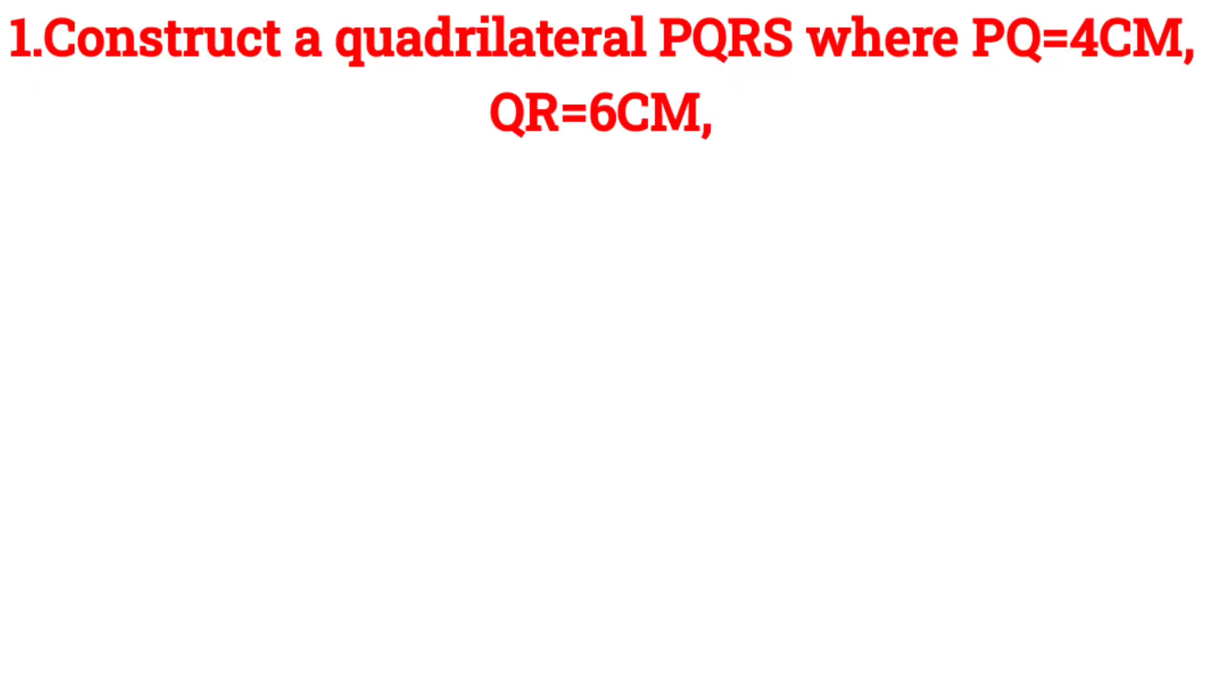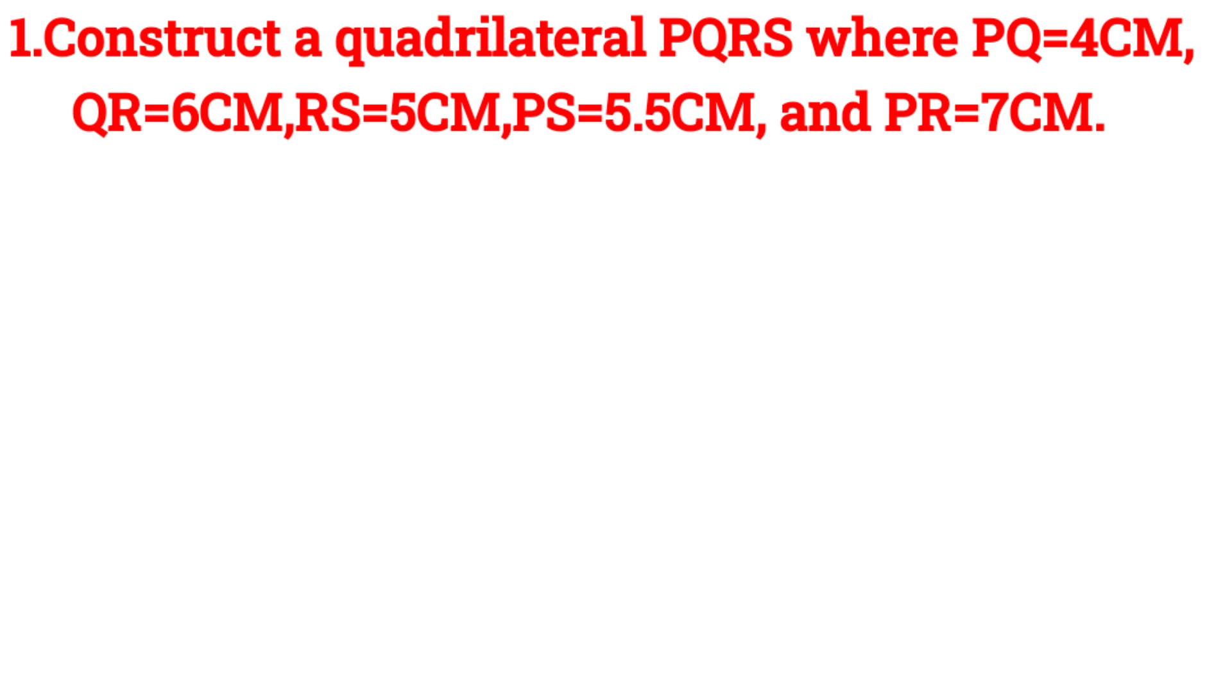Construct a quadrilateral PQRS where PQ is equal to 4CM, QR is equal to 6CM, RS is equal to 5CM, PS is equal to 5.5CM, and PR is equal to 7CM.